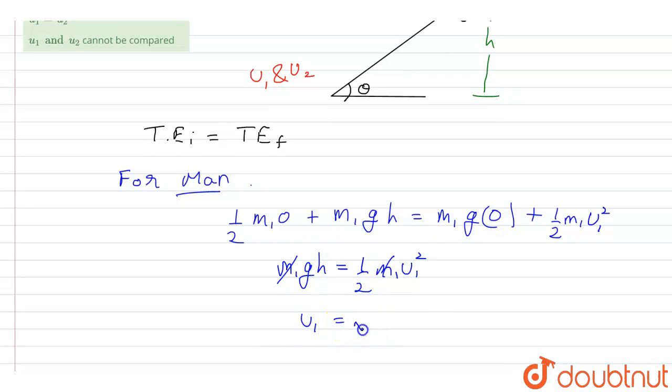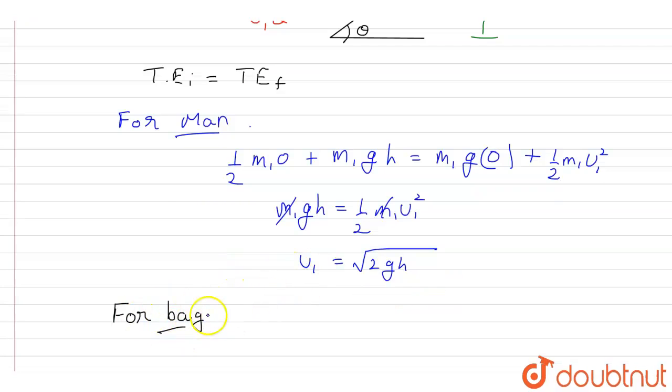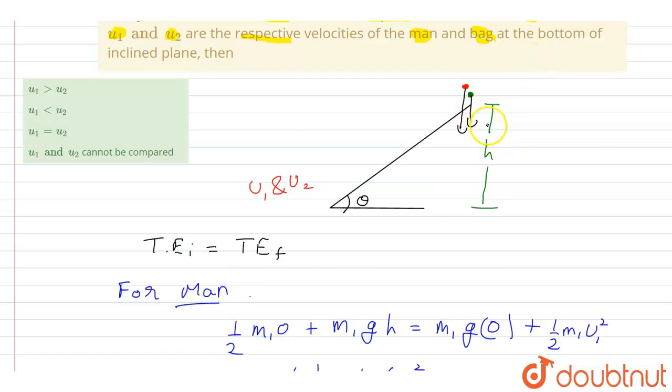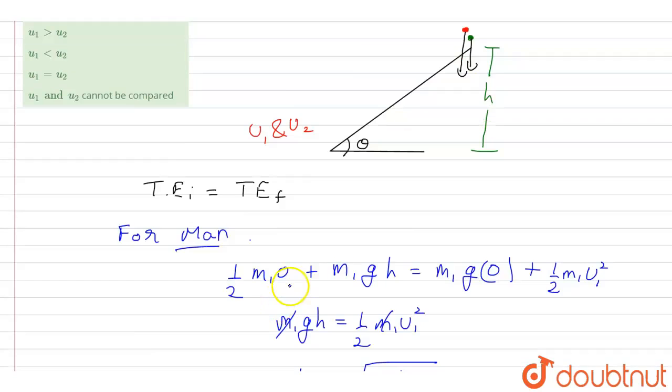Now in similar way, let us calculate u2 for bag. Now here initially the kinetic energy of the bag will be zero as initial velocity is zero, so I can write here zero plus